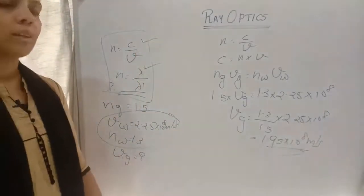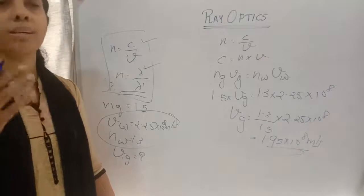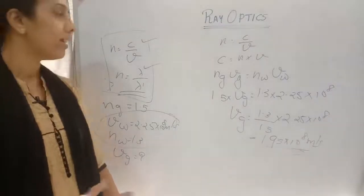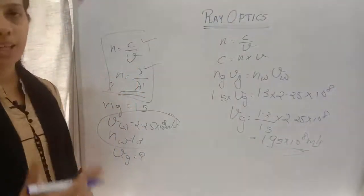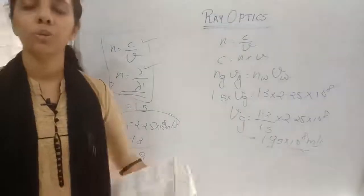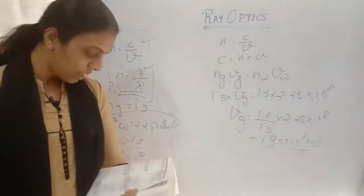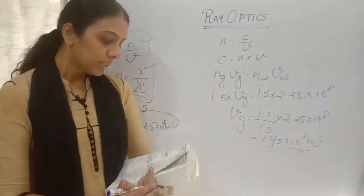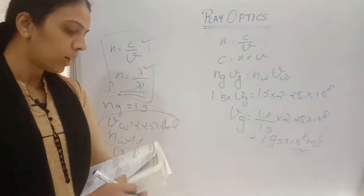You should know these formulas by heart: V = νλ, n = C/V, n = λ/λ'. Make sure these formulas are thorough for you. The next question: What is the apparent position of an object below a rectangular block of glass 6 cm thick, if a layer of water 4 cm thick is on top of the glass?